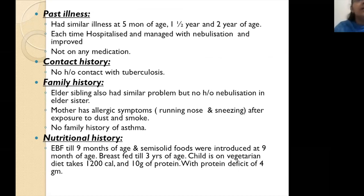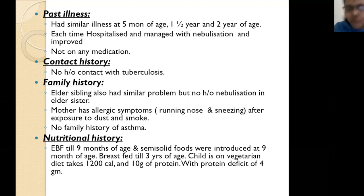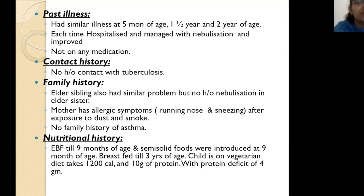In the past history, the child had similar illness at five months of age, one year, and two years of age — each time hospitalized and managed with nebulization, following which the child improved. This is the typical history in a case of HRAD or asthma. Importantly, this child is not currently on any medication, which is significant because children with two or three episodes are often put on controller therapy or rescue therapy via MDI.